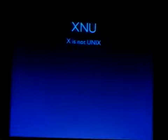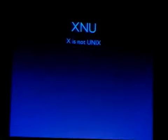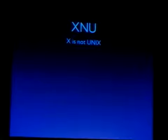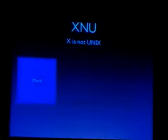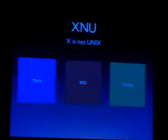Let's look at the architecture of Mac OS X, starting with the kernel, which is called XNU. XNU stands for 'X is Not UNIX' — so much for Mac OS X being UNIX. The kernel consists of three major parts: Mach, BSD, and the IOKit.